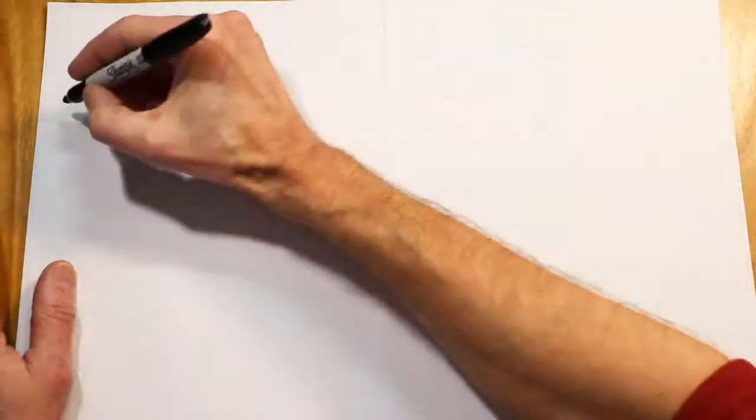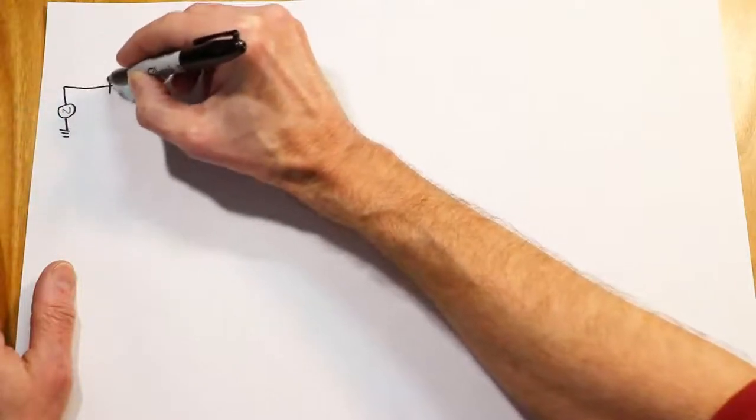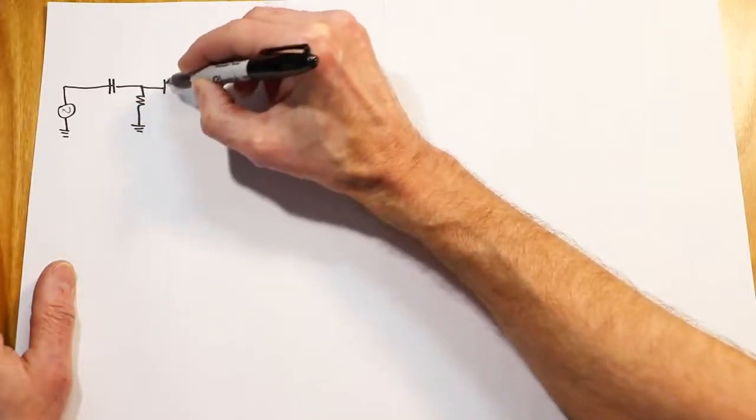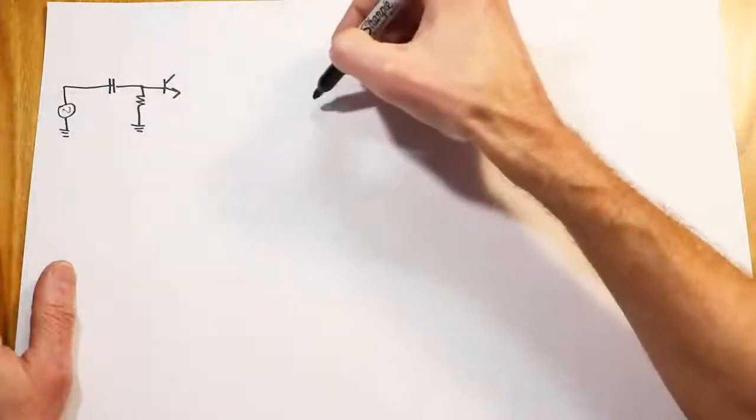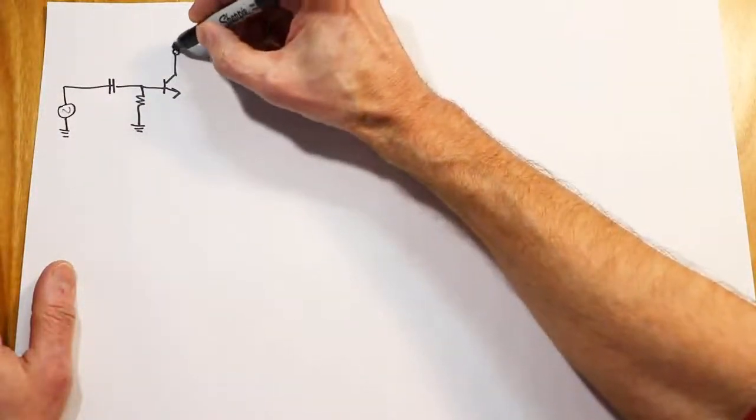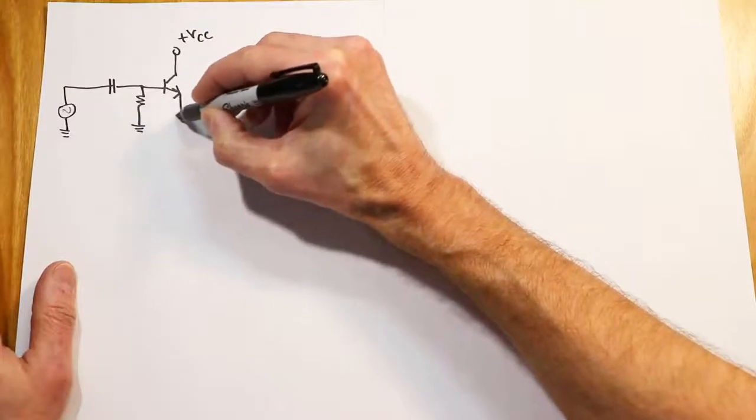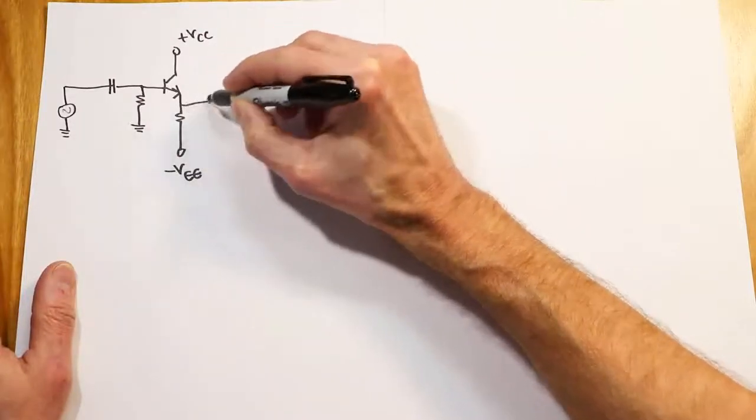So we start off with similar kind of biasing situations. We could use a voltage divider bias. We could use a two supply emitter bias. I'm going to go with the latter for no particular reason. So we'll be coupled in base resistor. There's our transistor. Now it turns out, because this is common collector, so the collector is the common between the input and output, we don't need a collector resistor. We just bring this right up to the power supply. And off the emitter, we have a single biasing resistor. This goes down in this case to the negative VEE. And the load is going to be connected off the emitter.